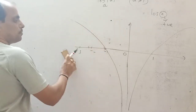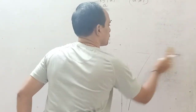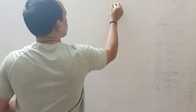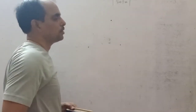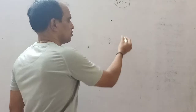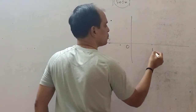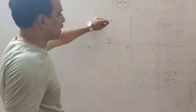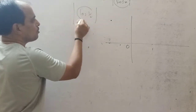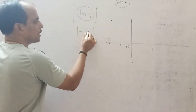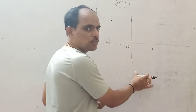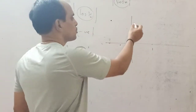Now, comparing log|x| with |log x|. For |log x|: the domain is x > 0 only. At x = 1/2, log(1/2) is negative, but modulus makes it positive. So for 0 < x < 1, the values are negative in log x, but |log x| reflects them to positive.